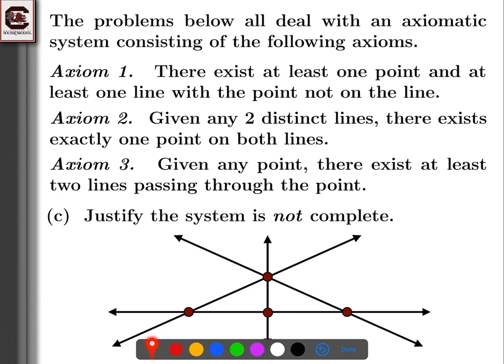Is this still valid? We still have what we started with — that one point and line not on the point, that hasn't changed. Given any two distinct lines, there exists exactly one point on both lines, so we can go through every pair if we wanted to. Axiom two is true. Given any point, there exists at least two lines passing through the point — and we can see that's true. So that finishes part C.